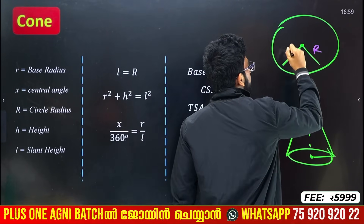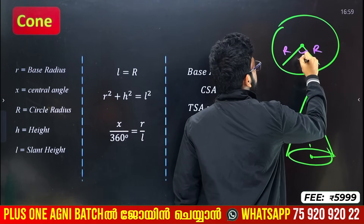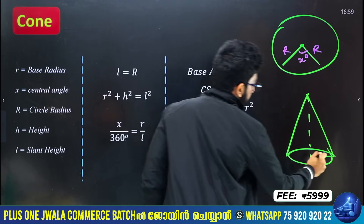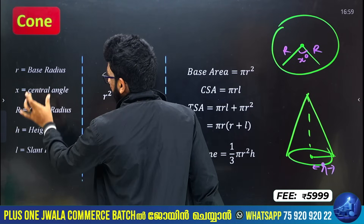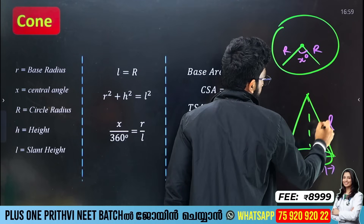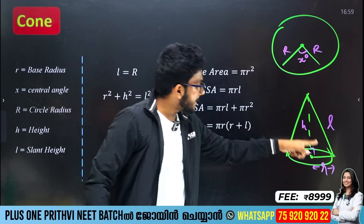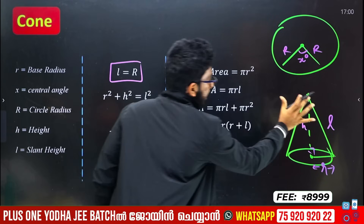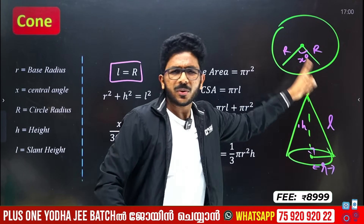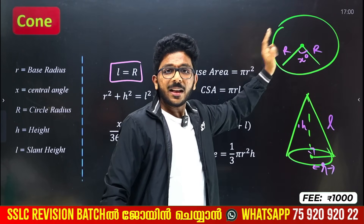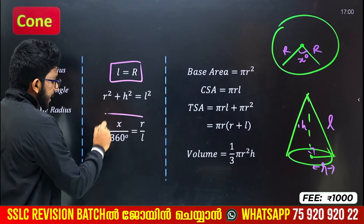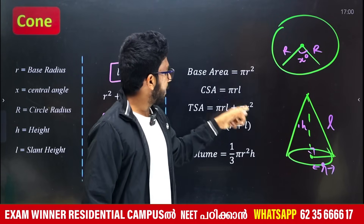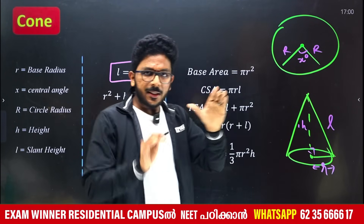Cone. This circle is R — capital R. I will take X degrees. X degree is the base radius. The base radius is the slant radius. This is the cone radius — 10 R. The circle radius is the X central angle. This is the slant height. This is a 90-degree triangle: H, R, L. H² + R² = L². Slant height is 10 cm, radius is 5 cm. Base area is πR². CSA is the curved surface area, which is πRL.